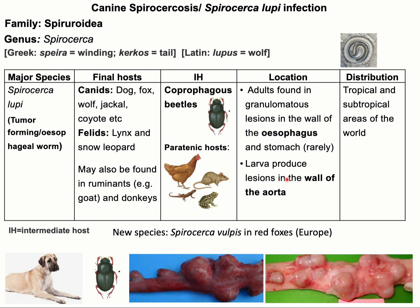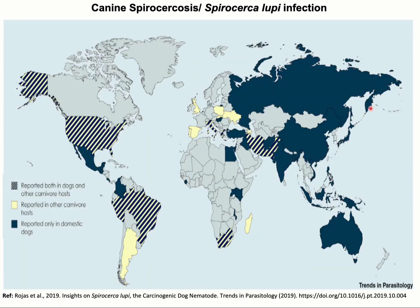...found in the wall of the aorta, along with different organs of the body. The parasite is distributed in tropical and subtropical regions of the world. Sporadic infections are also seen in temperate regions of the world.